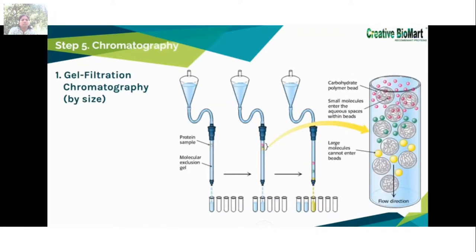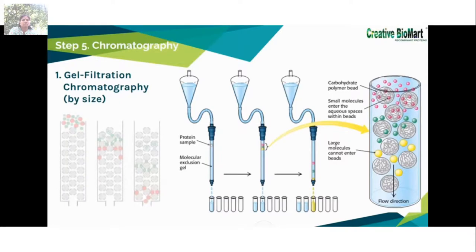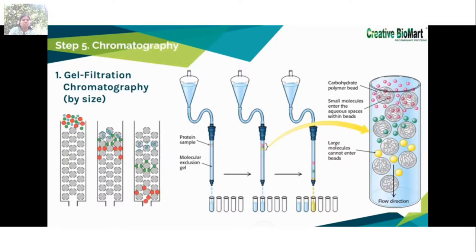Chromatography offers more discriminating separations on the basis of size. The column consists of porous beads made of insoluble but highly hydrated polymers such as dextran, agarose, or polyacrylamide. Small molecules can enter the pores of the beads but large ones cannot; thus, small molecules travel both inside and between the beads whereas large ones go only between the beads. Small molecules therefore flow a longer distance, so large molecules flow more rapidly through the column and emerge first, while small molecules take a longer, more tortuous path and exit last.